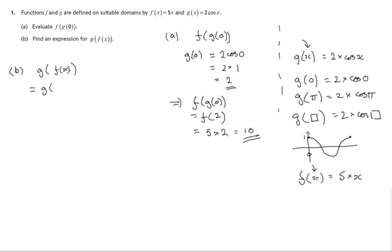So what is f of x? We're told it's 5x. So now if we're looking at g and we're saying what goes into g, the answer is 5x. Now remember, we said when 0 went in, it was 2 times cos 0. When pi goes in, it's 2 times cos pi. Now when anything goes in, it's 2 times cos times that anything. In this particular case, 5x is going in. So twice cos of 5x will come out. So that's 2 times cos 5x. And that's the answer to part b. That's an expression for g of f of x.